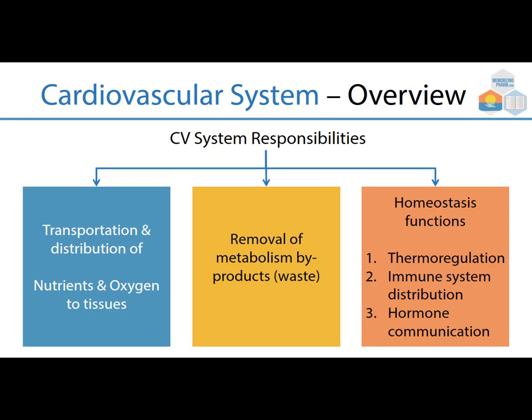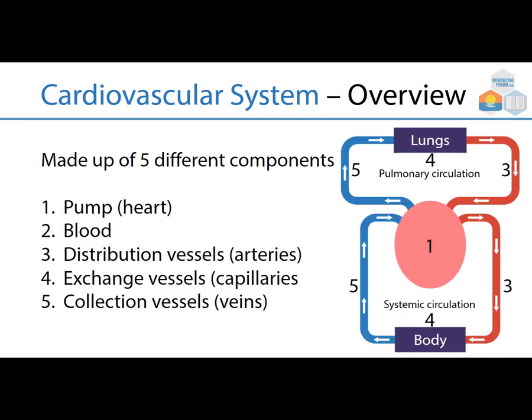What are the components of this system? The first is the pump, or the heart, which circulates blood. It has three levels of vessels: distribution vessels (arteries), exchange vessels (capillaries), and collection vessels (veins). It's important to know where blood is distributed and in what quantities.